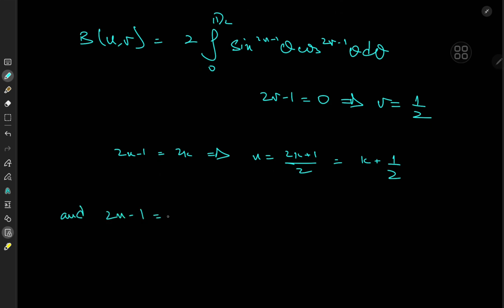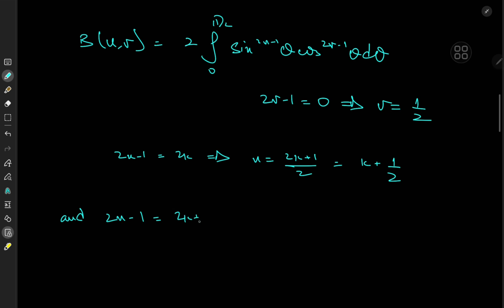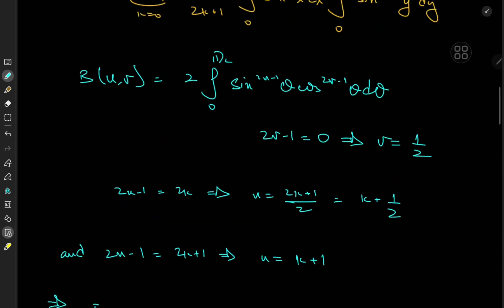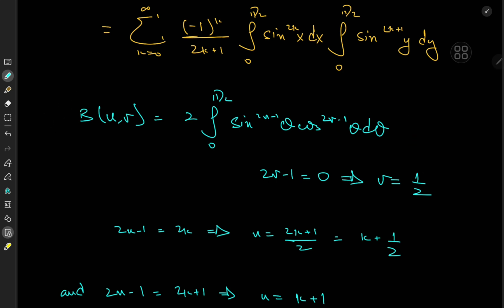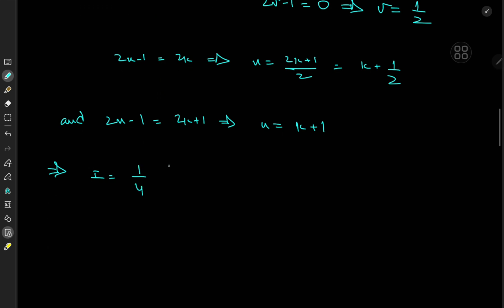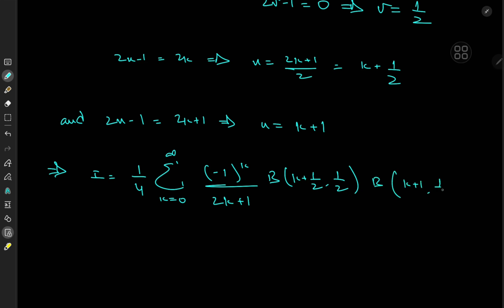For the y-integral, 2u minus 1 equal to 2k plus 1 implies 2u equals 2k plus 2, so u equals k plus 1. This implies that the target integral I should have factors of 1 quarter — from two factors of 1 half, one from each integral. So I equals 1 quarter of the sum over k from 0 to infinity of negative 1 to the k over 2k plus 1 times the beta function at k plus 1 half and 1 half, times the beta function at k plus 1 and 1 half.